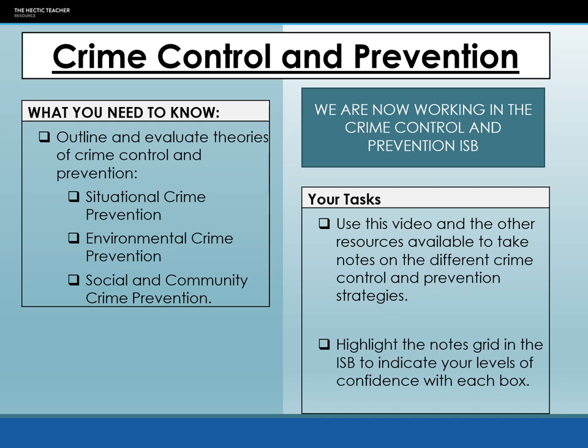This lecture takes you through the crime control and prevention methods put forward by sociologists, in particular by the left and right realists. It might be an idea to pause and review left and right realist causes of crime, as it will closely link with what we look at today. We're going to cover situational, environmental, and social and community crime prevention. There is a fourth one — surveillance — which we'll look at separately in the next lecture.